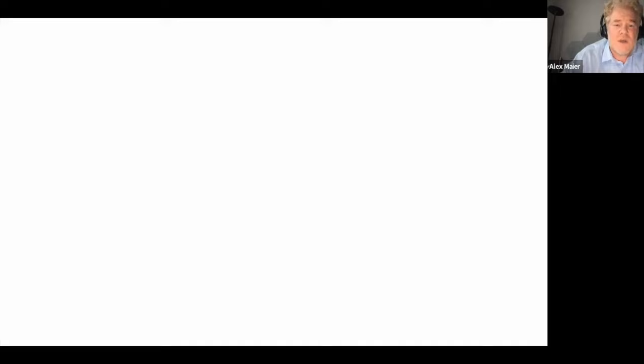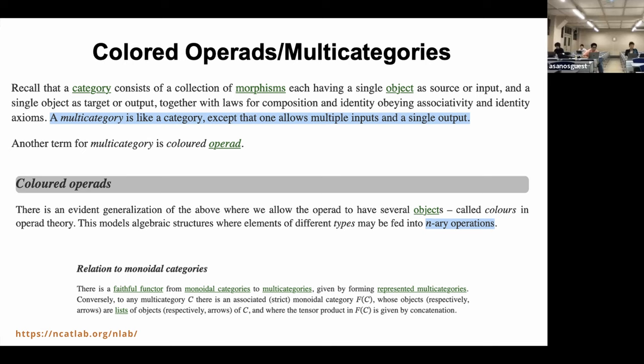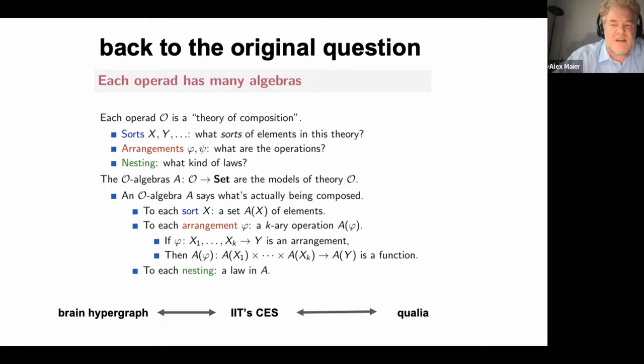What I learned is that what I'm actually interested in is colored operads, where we can move beyond binary operations to n-ary — trinary and so on — non-pairwise higher-order interactions. Those are multi-categories that allow for that. Another question that arises for me: if there is an isomorphic relationship between brain hypergraphs — the causal structure of brain activity — and qualia, are brain information structures, cause-effect structures, and qualia all different algebras of the same operad or not? These are questions I want to throw out and see if they even make sense.